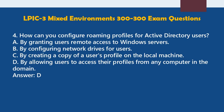Question 4: How can you configure roaming profiles for Active Directory users? A. By granting users remote access to Windows servers. B. By configuring network drives for users. C. By creating a copy of a user's profile on the local machine. D. By allowing users to access their profiles from any computer in the domain. Answer: D.